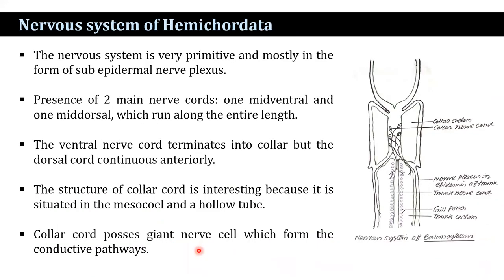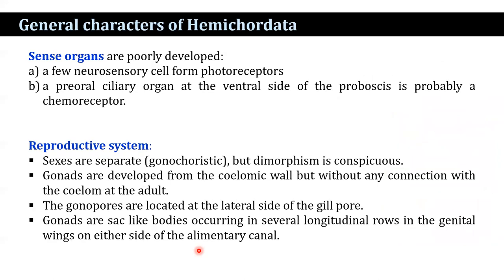The nervous system is very primitive, mostly in the form of a sub-epidermal nerve plexus with two main nerve cords — one mid-ventral and one mid-dorsal — running along the entire length. The ventral nerve cord terminates at the collar region, but the dorsal cord continues to the anterior portion of the body. The collar cord is situated in the mesoderm as a hollow tube and possesses giant nerve cells forming conductive pathways. A pre-oral ciliary organ at the anterior end of the proboscis is probably chemosensory in nature.